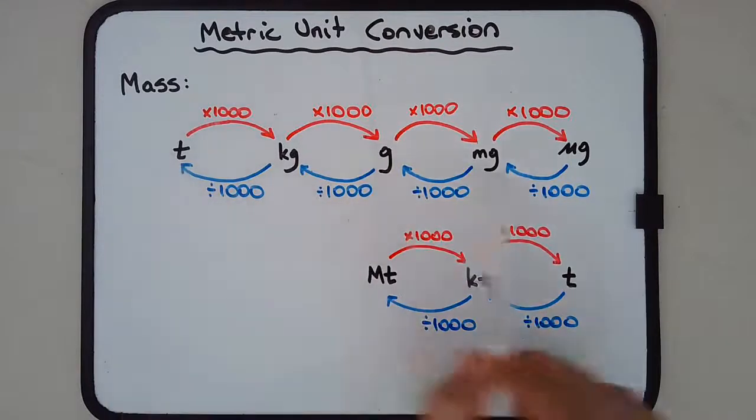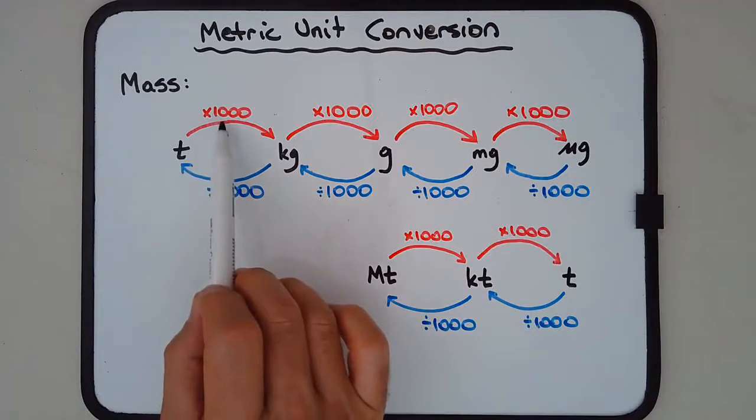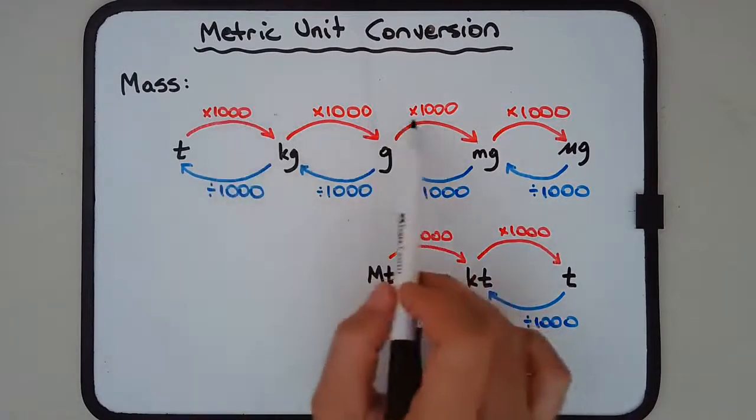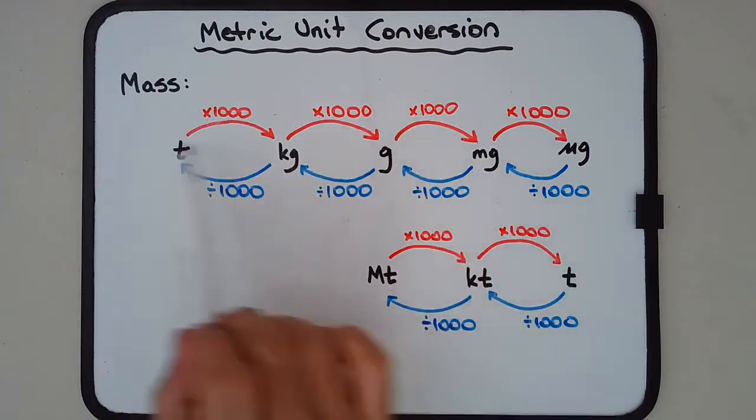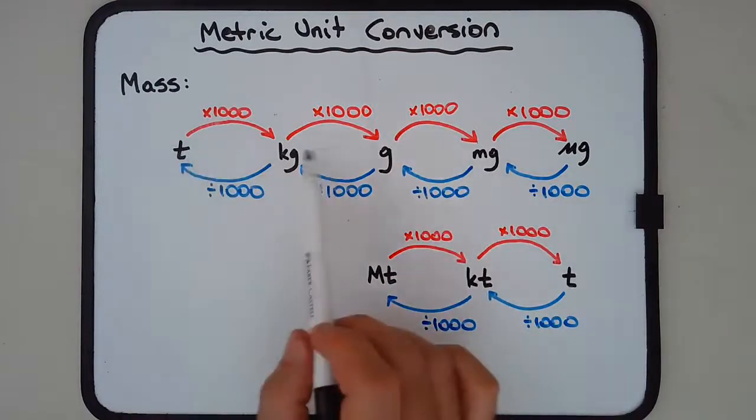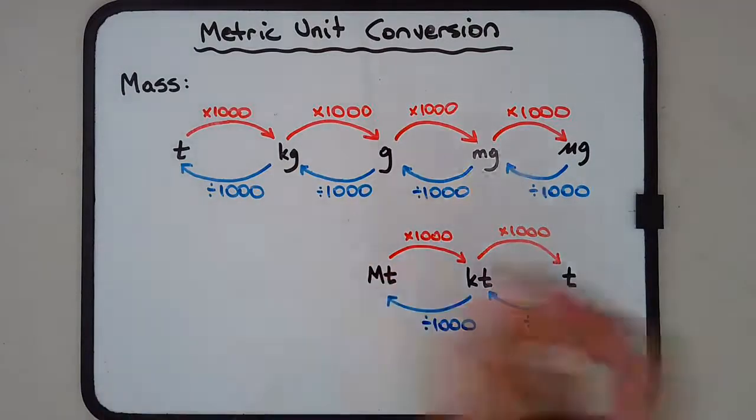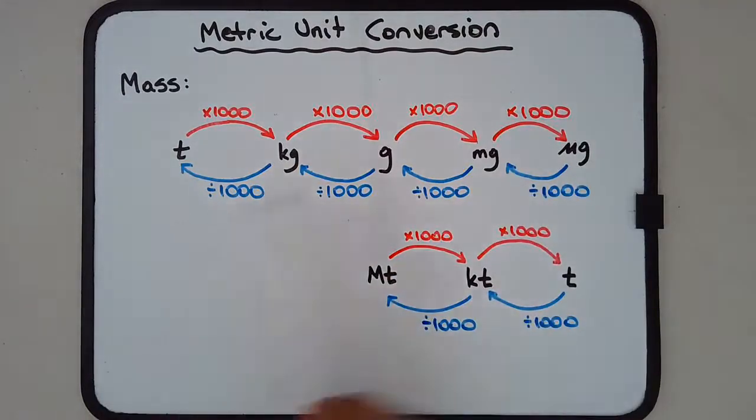If you wanted to go from, say, tons to milligrams in one step, you can multiply by one with the number of zeros that are needed. So there's nine zeros, so to convert tons to milligrams you can multiply by one billion all at once. But you don't have to do it all at once, you can just do it one step at a time and convert between these various units.